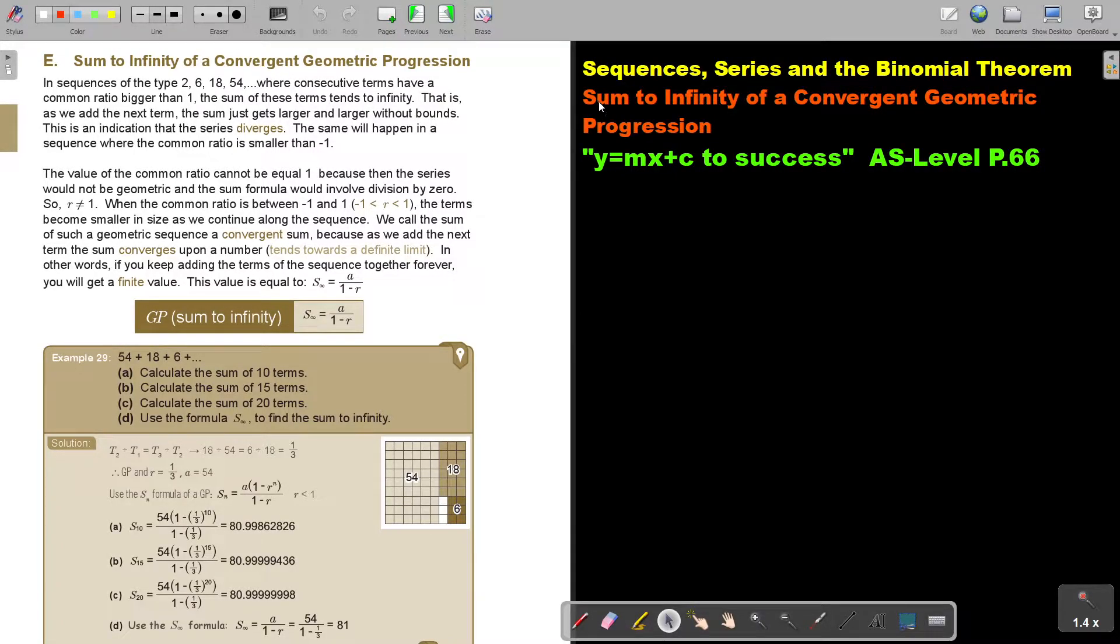In this video, we will look at the sum to infinity of a convergent geometric progression. You will find this on page 66 in the Namibia AS level mathematics textbook Y equals MX plus C to success.